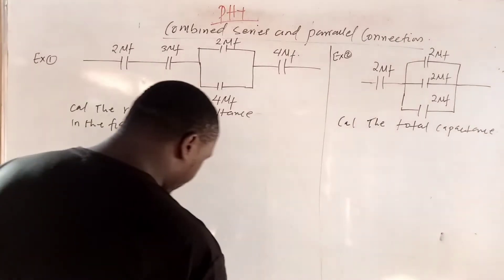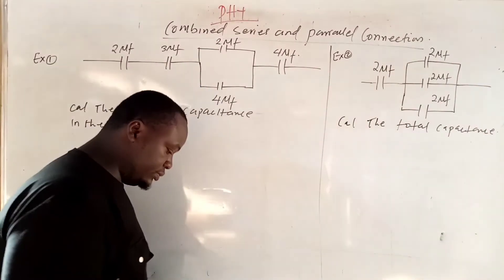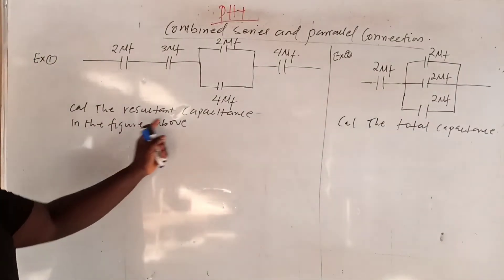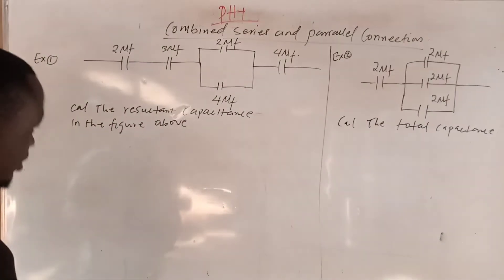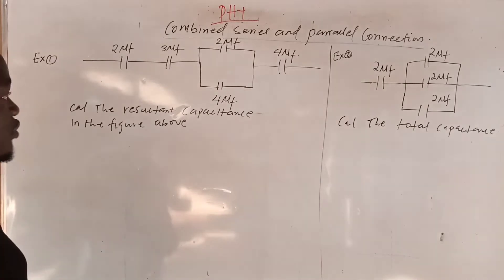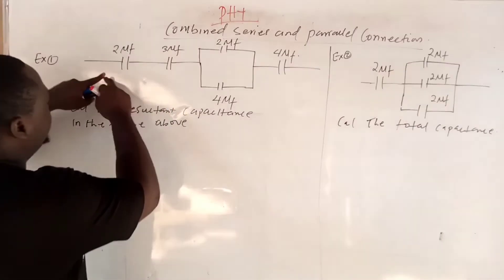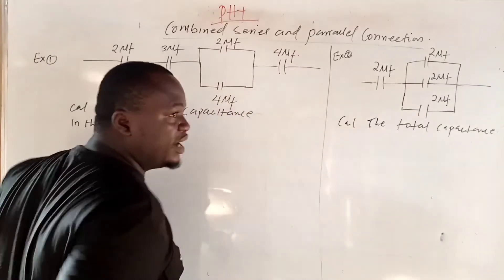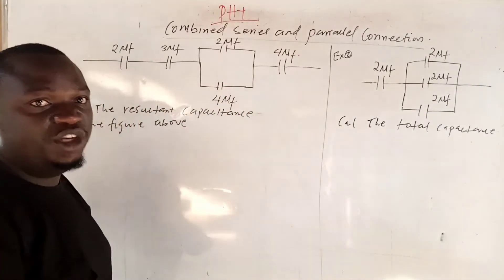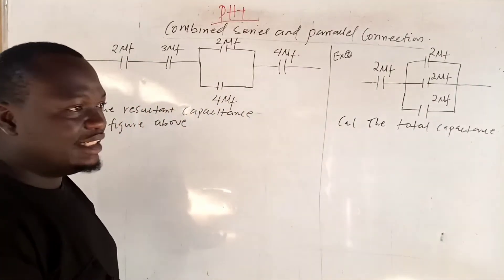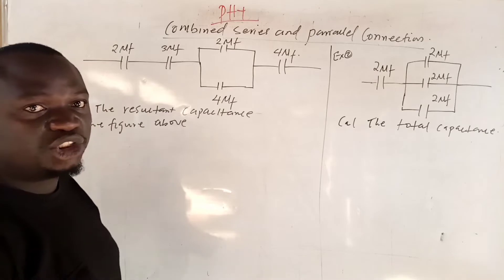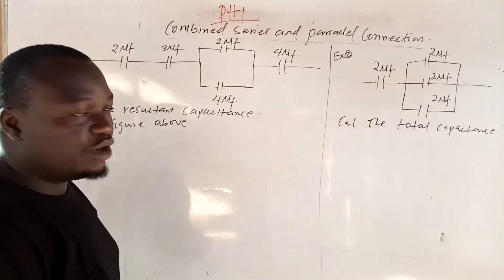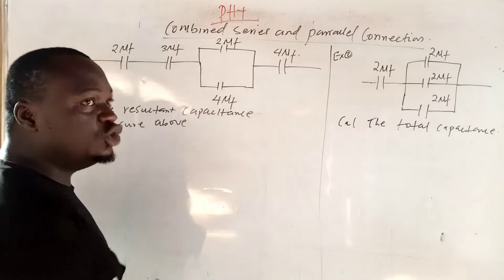Welcome. This is the combined series and parallel connection video, Example number one. This is part 3 of the series — I started with series connection, then parallel, and now this is a combination of the two. Calculate the resultant capacitance in the figure above.